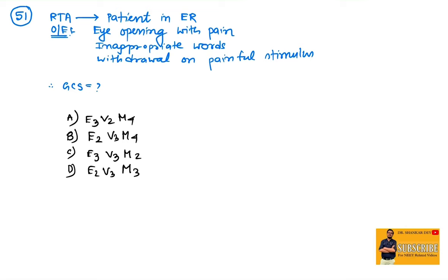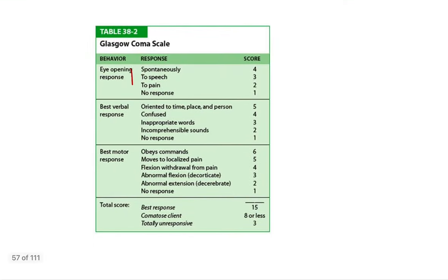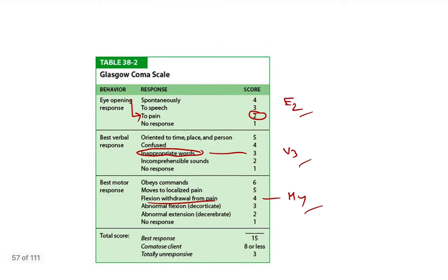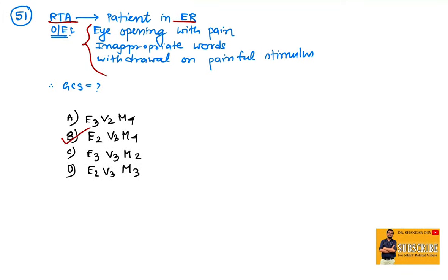Hello everyone, welcome to the sixth video of NEET PG recall position discussion. A patient following a road traffic accident presented to ER with eye opening with pain, inappropriate words, and withdrawal on painful stimulus. What is the GCS score? Eye opening with pain means E2, verbal response with inappropriate words means V3, and best motor response withdrawal from pain means M4. So in this case, GCS will be E2 V3 M4. This is a very important question for competitive exams, especially GCS scoring.